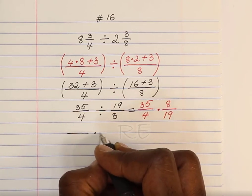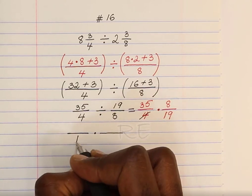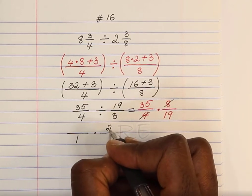Now, we're going to cross-cancel. 4 goes into itself once and into 8 twice.